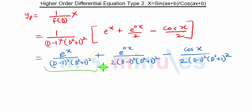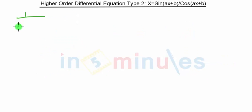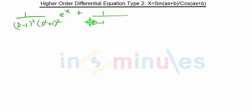As you can see, the first part is Type 1 and the second part is Type 2. We will first consider the Type 1 part, which is 1/[(D−1)²·(D²+1)²] · e^x plus 1/[(D−1)²·(D²+1)²] · e^(0x).